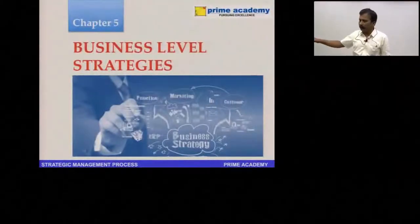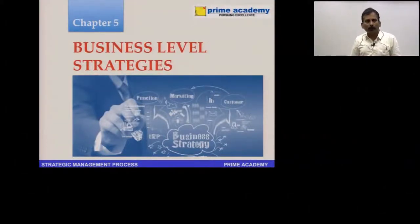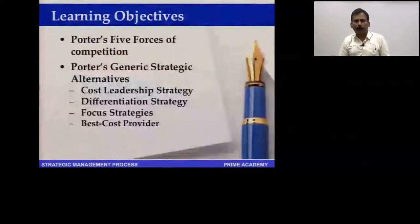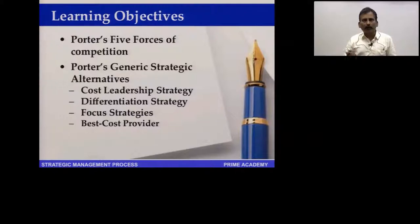We get down to Chapter 5, where we learn about business level strategies. Earlier we learned about corporate level strategies; we now go to business level strategies. There are two important things to learn: Michael Porter's generic strategic alternatives and Michael Porter's five force model.